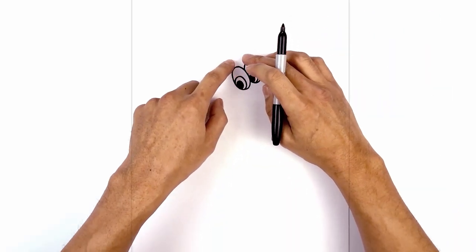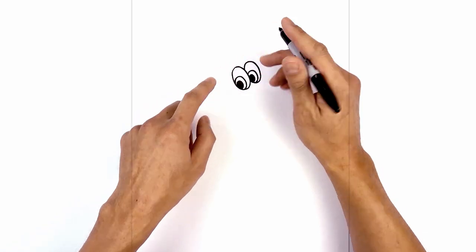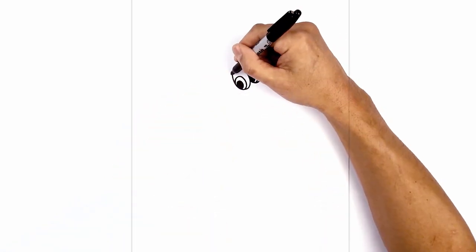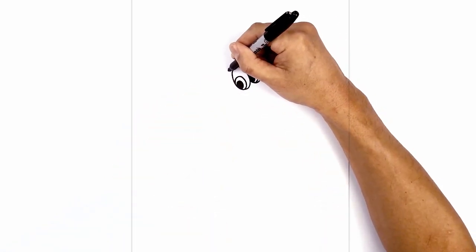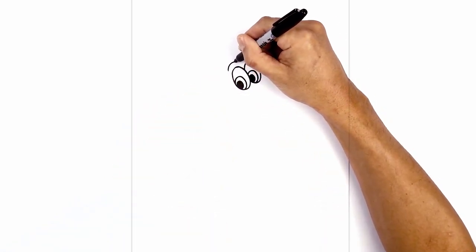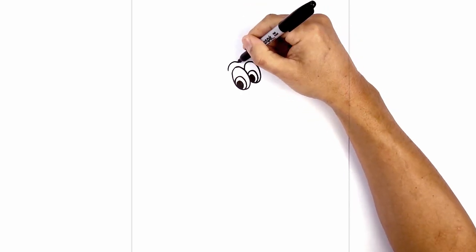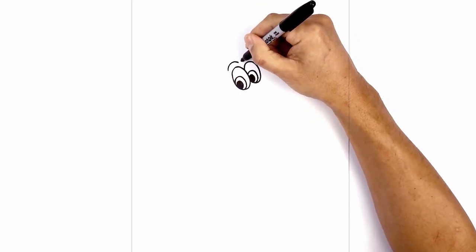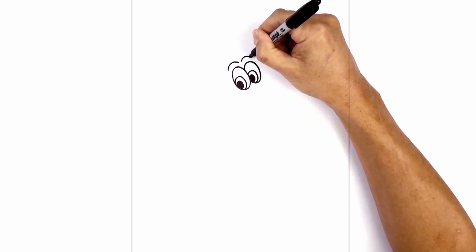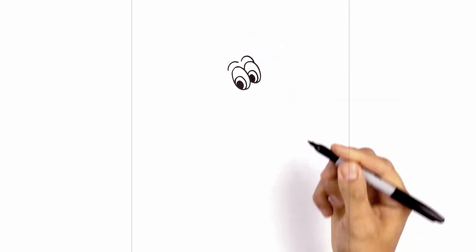Directly above each eye, we're going to draw a curve for the brow. On the left side, we're going to step up, curve up, and then down. We're going to do the same thing on the right — leave a little gap, go up, and then pull this down towards the outside of the eye.